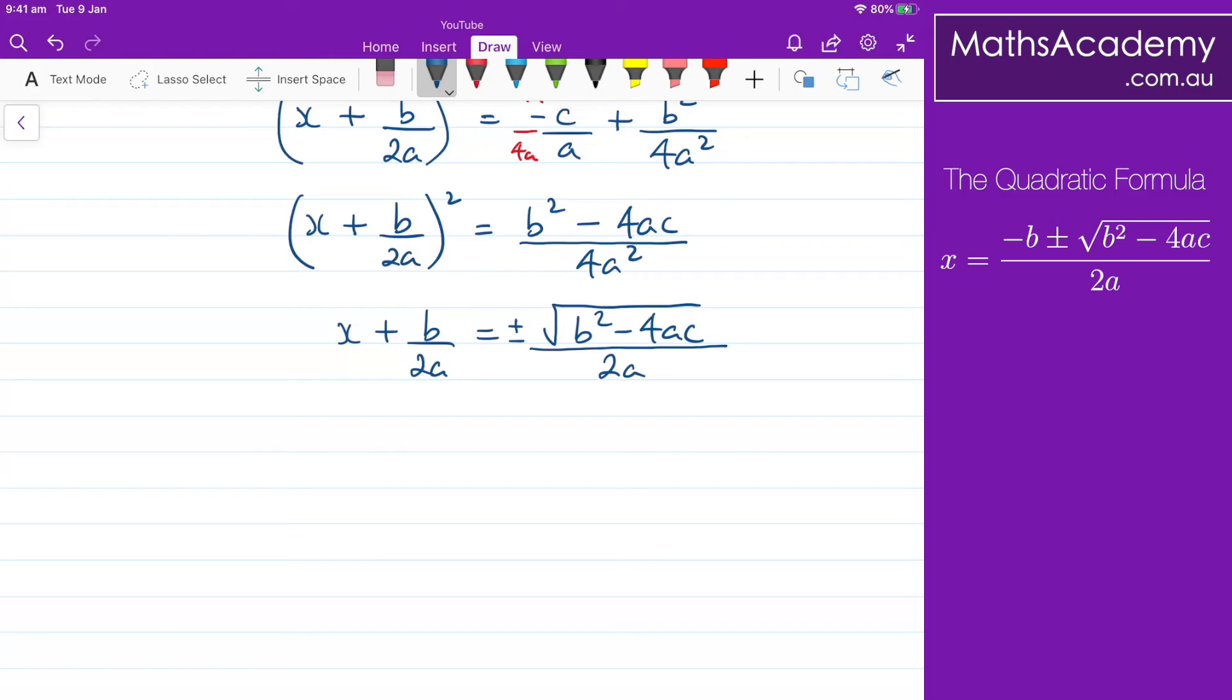And the last step is to subtract b/2a from both sides. So we get that x is equal to -b/2a ± √(b² - 4ac)/2a.